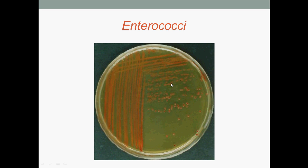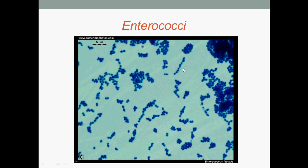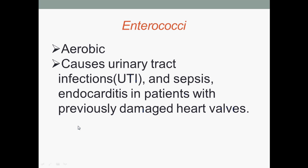Colonies of enterococcus and enterococcus under the microscope — some are diplococci, some take the appearance of short chains. Enterococci are aerobic and cause urinary tract infections (UTI), sepsis, and endocarditis in patients with previously damaged heart valves.